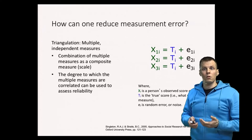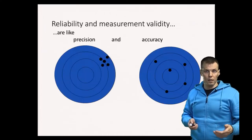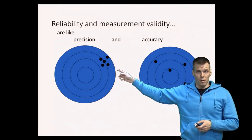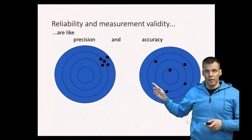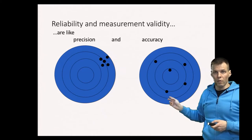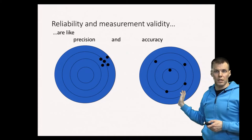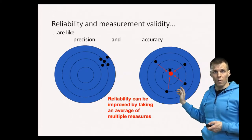That can be understood through the same principle using the target practice diagram. So here we have highly reliable but invalid measures. Here we have a bit unreliable but valid measures. The idea of taking a sum or mean of these measures is that we check what is the center, the mass center of these five shots.